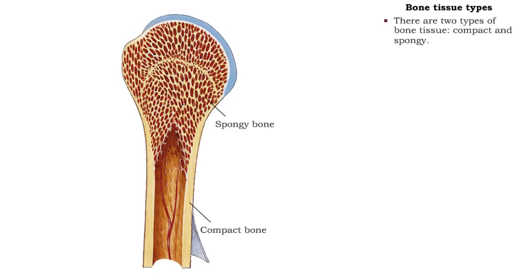There are two types of bone tissue: compact and spongy. All of the bones of the skeleton have both kinds of tissue.